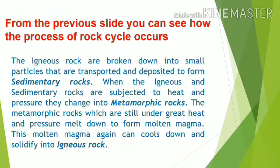From the previous slide you can see how the rock cycle occurs. Igneous rocks are broken down into small particles that are transported and deposited to form sedimentary rocks. When igneous and sedimentary rocks are subjected to heat and pressure, they change into metamorphic rocks. The metamorphic rocks, still under great heat and pressure, melt down to form molten magma. This molten magma can again cool down and solidify into igneous rock.